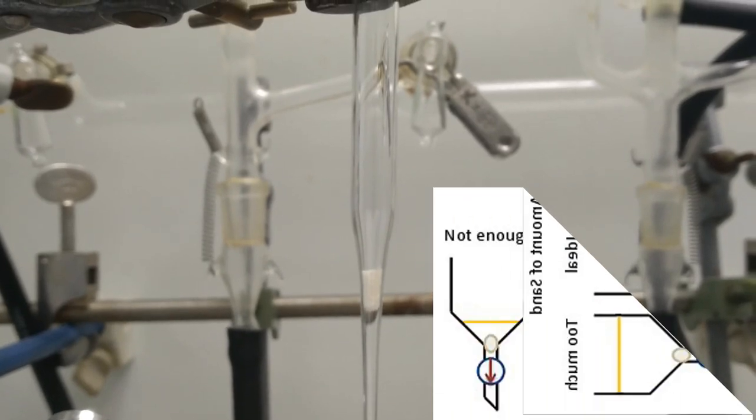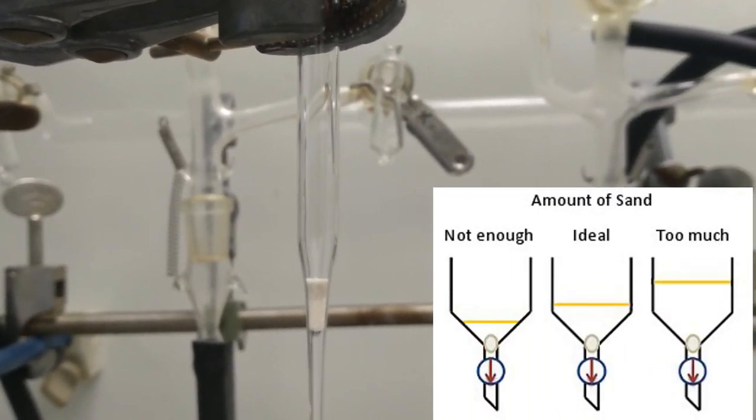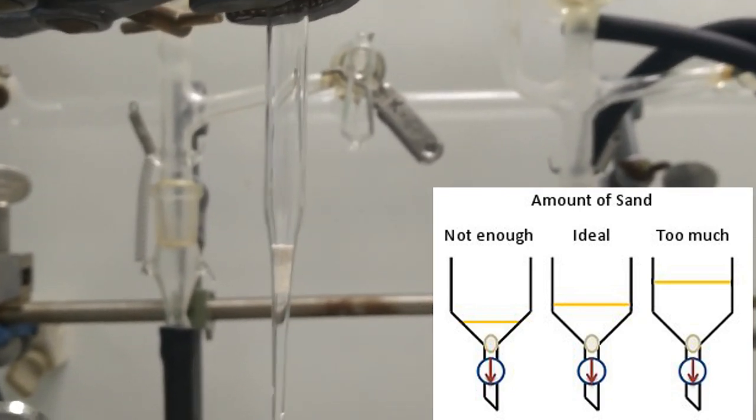After closing the nozzle with cotton, we need to add sand on top of it until a uniform cylindrical surface has been achieved.